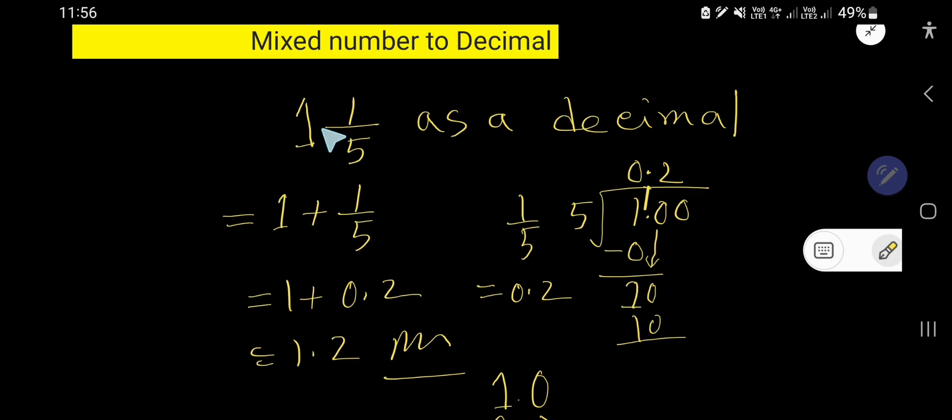So one and one fifth equals 1.2. This is the decimal form of this mixed fraction.